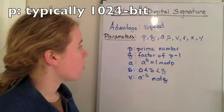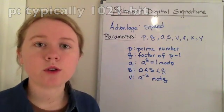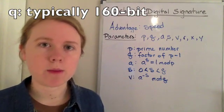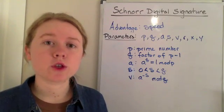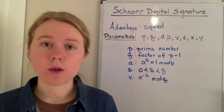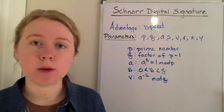We have p, which is a prime number. We also have q, which is a factor of p minus 1. We also have to choose an a, so that a to the power q is 1 mod p.